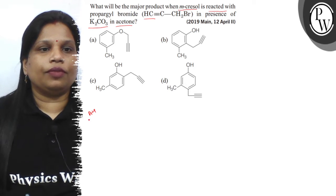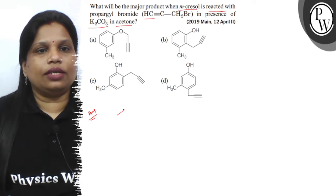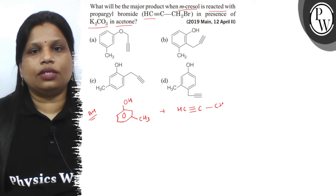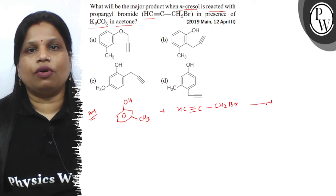Let's do the question where the reactant is metacresol. Let's write down the structure of metacresol. It is treated with propargyl bromide. This is the structure of propargyl bromide in presence of potassium carbonate.